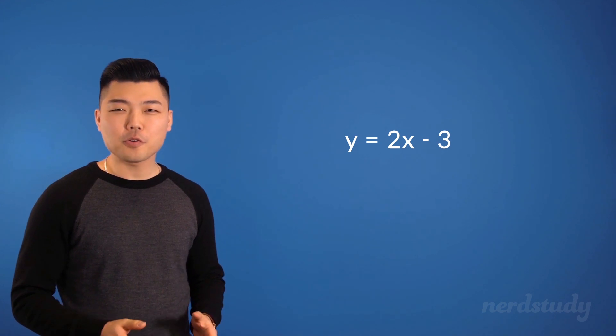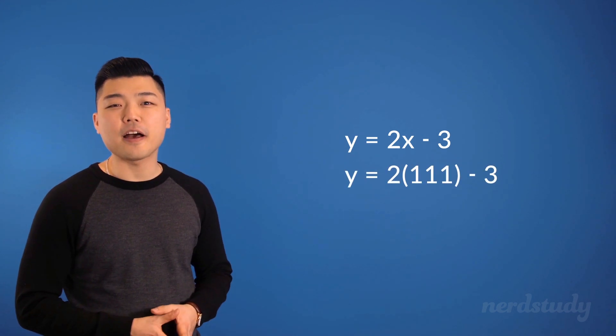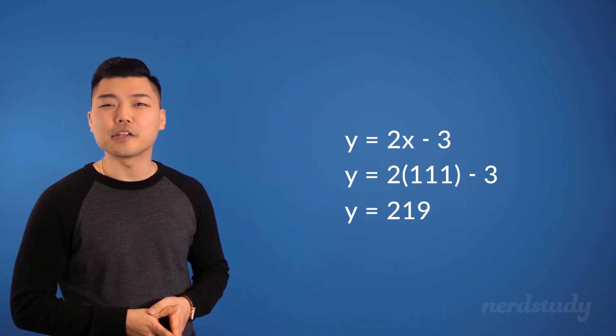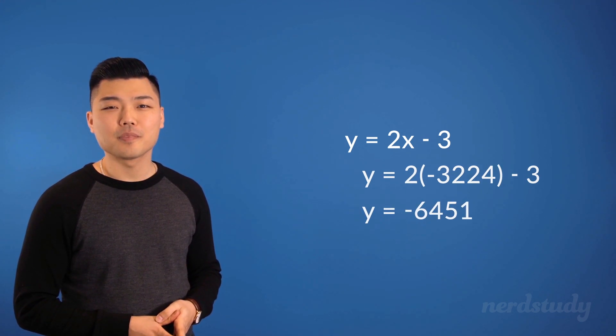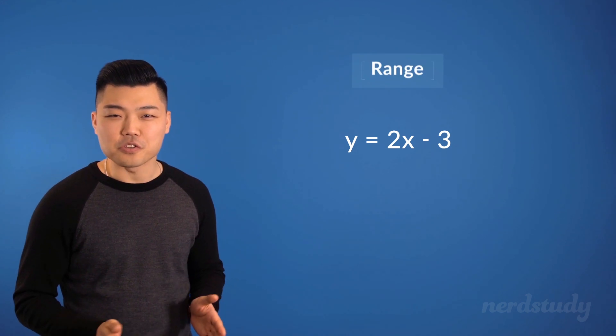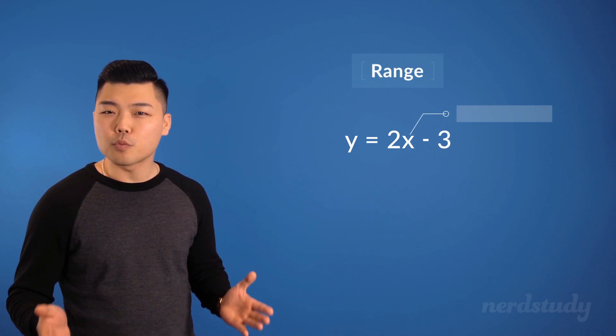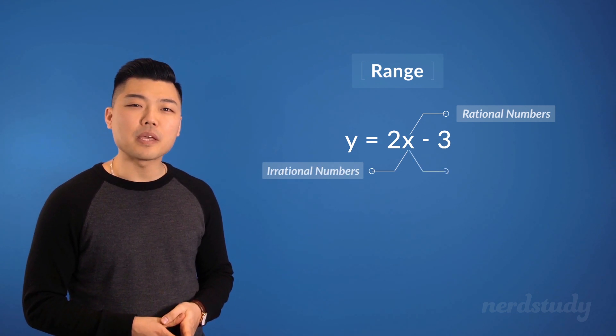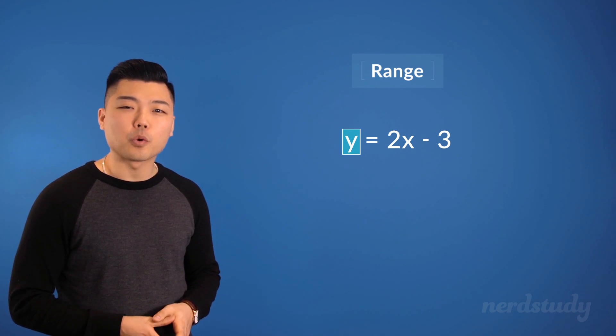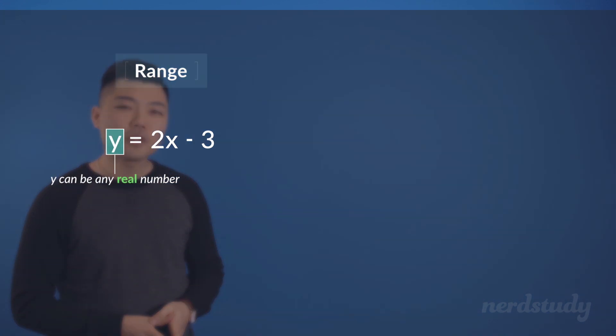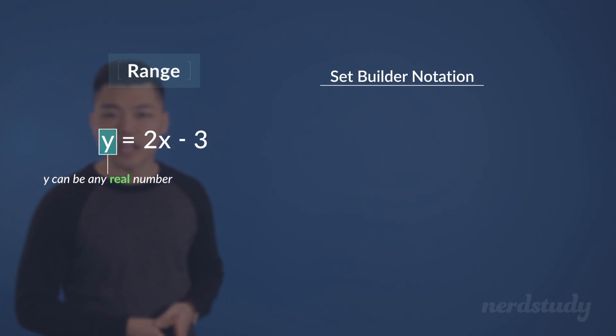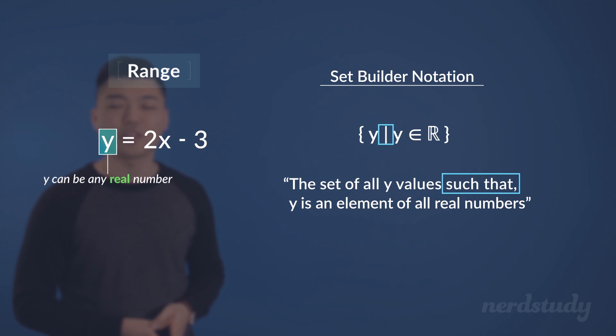Great! So, you'll notice that as we plug in a larger x value, we also get a larger y value. And as we plug in a smaller x value, we get a smaller y value as well. This brings us to the concept of range, since just as x can be any rational number and irrational number, making it any real number, our y, or shall I say our range in this case, can also be any real number as well. To express this in set notation once again, we can write it like so, which stands for the set of all y values such that y is an element of all real numbers.